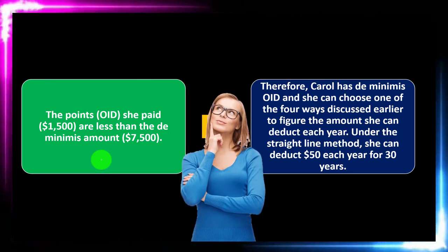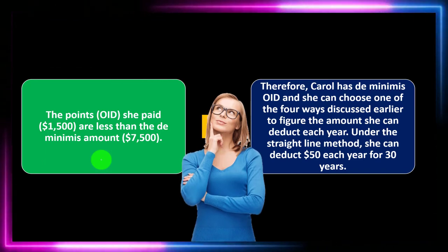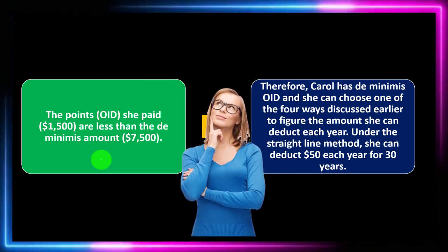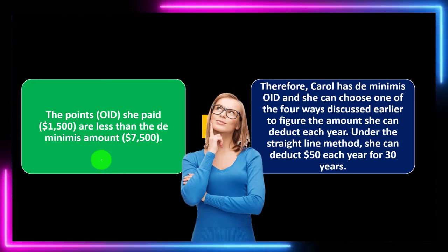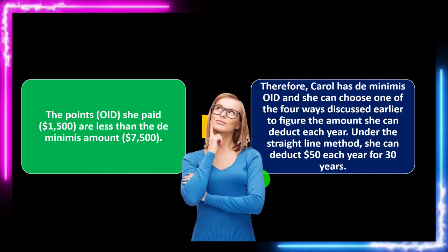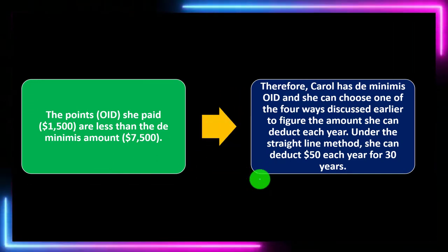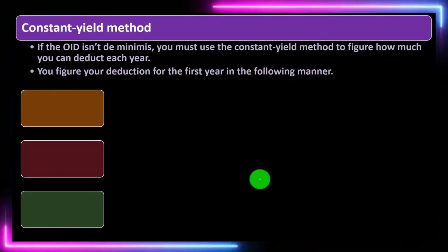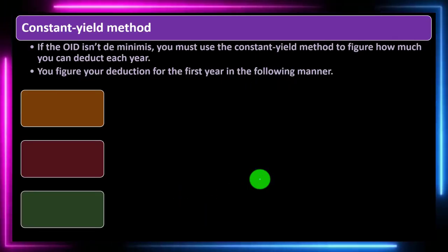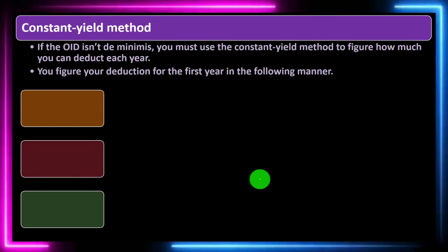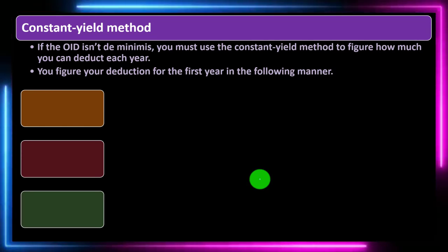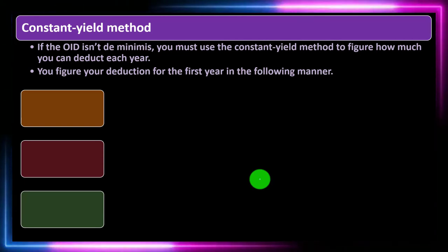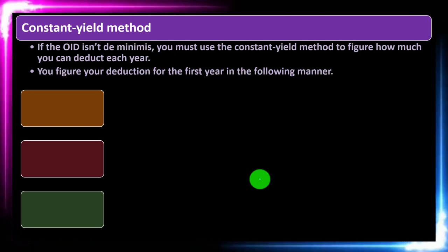The easier and more appropriate thing to do — like a straight-line method — is appropriate when the amount is small and basically de minimis to the overall decision making. Under the straight-line method, Carol can deduct $50 each year for 30 years. Usually, constant yield method: if the OID isn't de minimis, you must use the constant yield method to figure how much you can deduct each year.